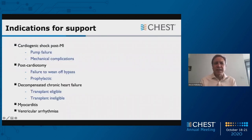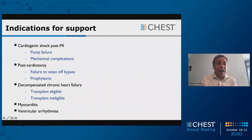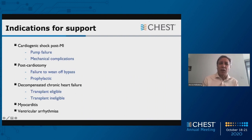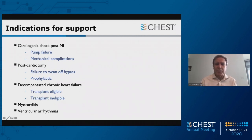Indications for support: probably the most common indication is cardiogenic shock after MI, either due to pump failure or to various mechanical complications associated with myocardial infarction — I'm going to show you a couple of those later. After cardiotomy and bypass surgery, you might have failure to wean off bypass and need a balloon pump, or you might do this prophylactically. Patients with decompensated chronic heart failure may be treated with balloon pumping, whether transplant eligible or not. Patients with myocarditis and ventricular arrhythmias may also need hemodynamic support.